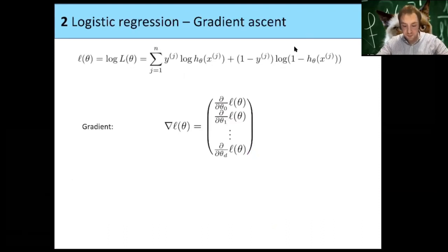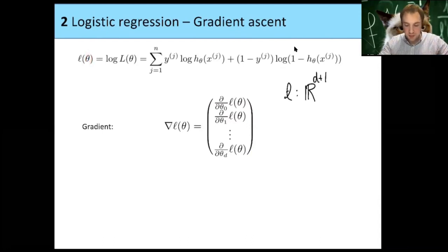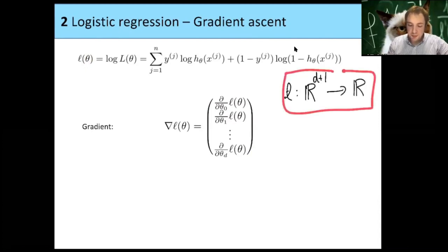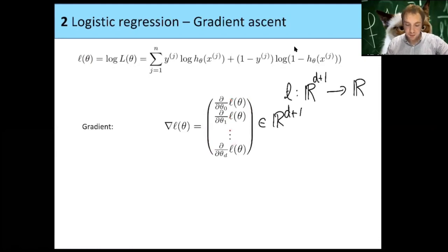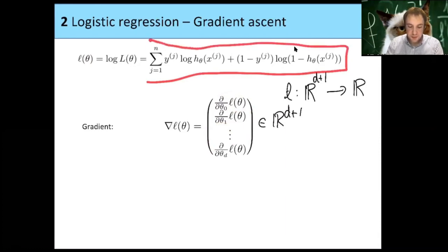The log likelihood is a function from R^(d+1) to R — the input is our weight vector theta. The gradient is a vector in R^(d+1) where each component is the partial derivative in the corresponding direction: partial with respect to theta_0, then theta_1, and so on.